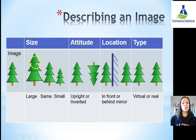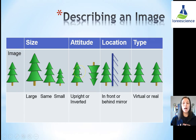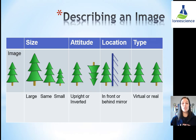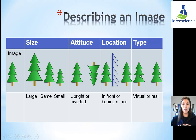When referring to size, we always compare it back to the original object — is our image larger, smaller, or the same? In terms of attitude, it can either be upright or inverted, again always comparing to the original object. Location refers to whether the image appears in front or behind the mirror. And type refers to whether the image is virtual or real — virtual means it won't actually show up on a screen, while real means it would show up on a screen, like your hand or a piece of paper placed there.